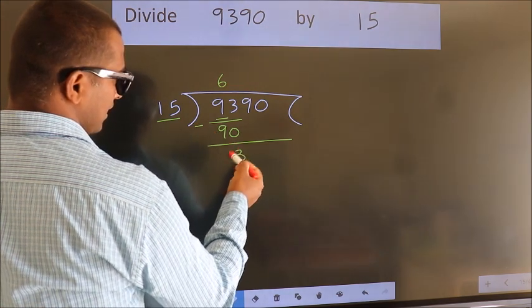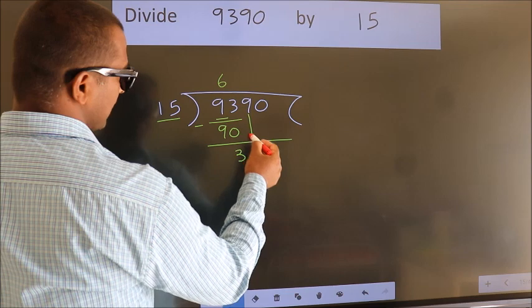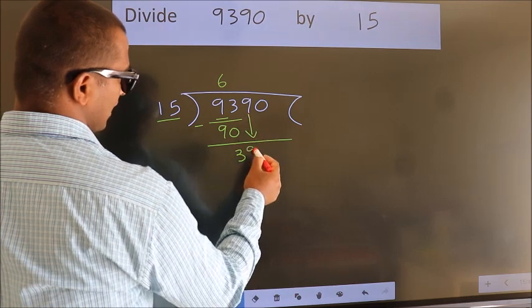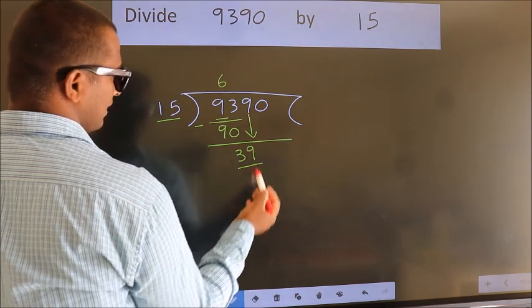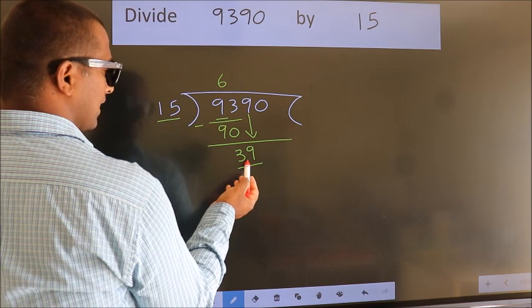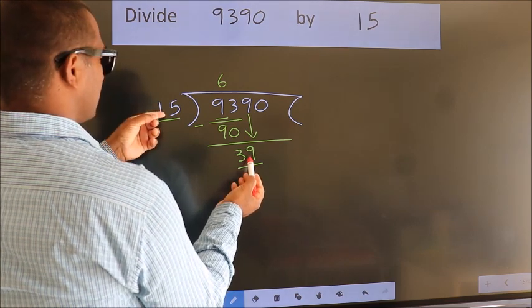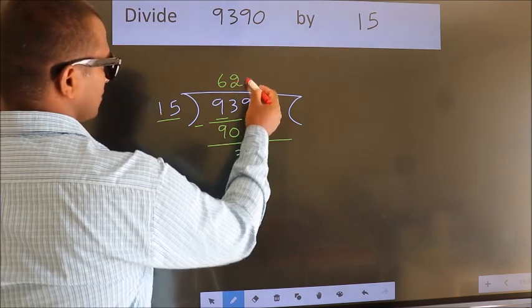We get 3. After this, bring down the beside number, so 9 down, so 39. A number close to 39 in the 15 table is 15 times 2 equals 30.